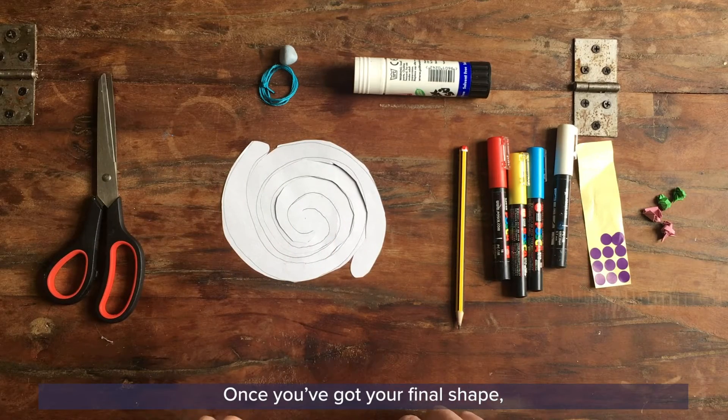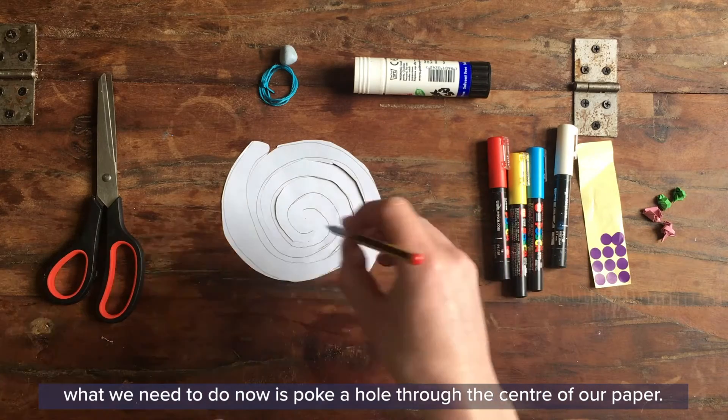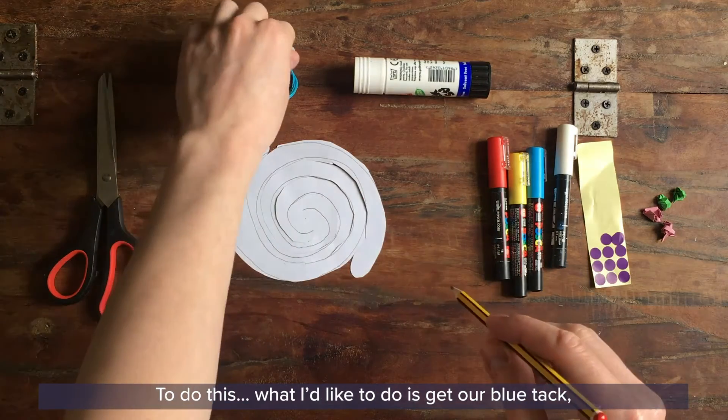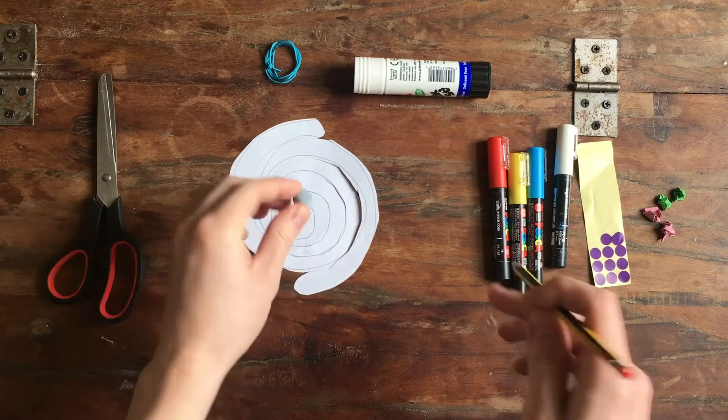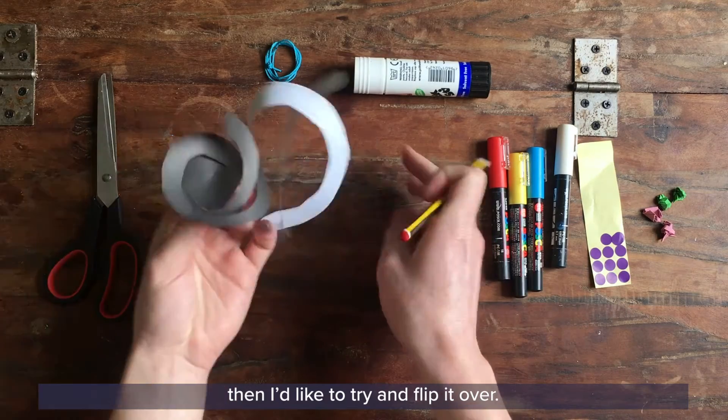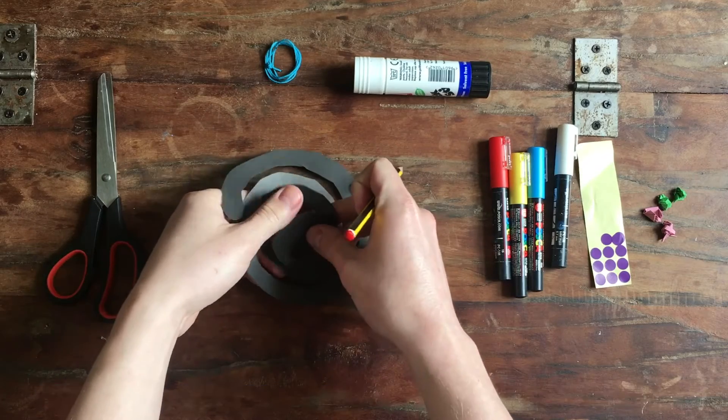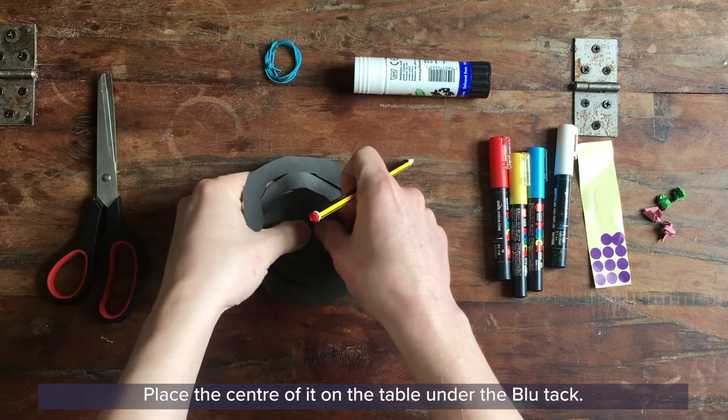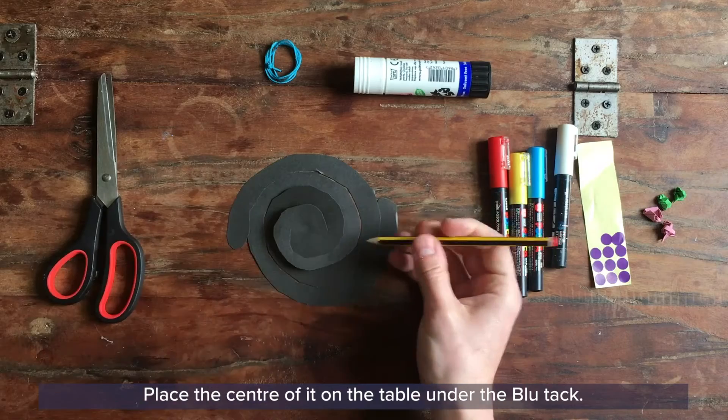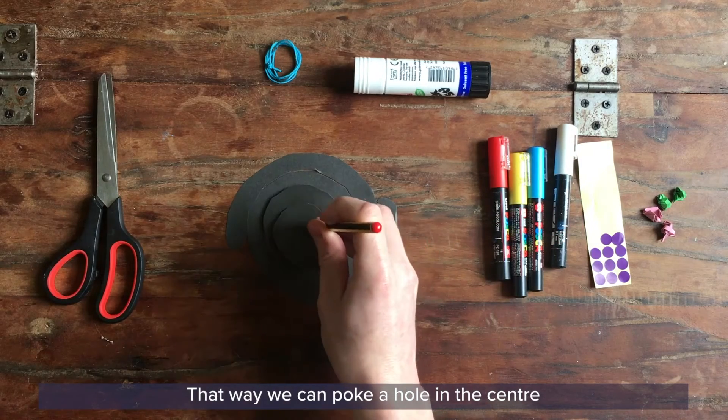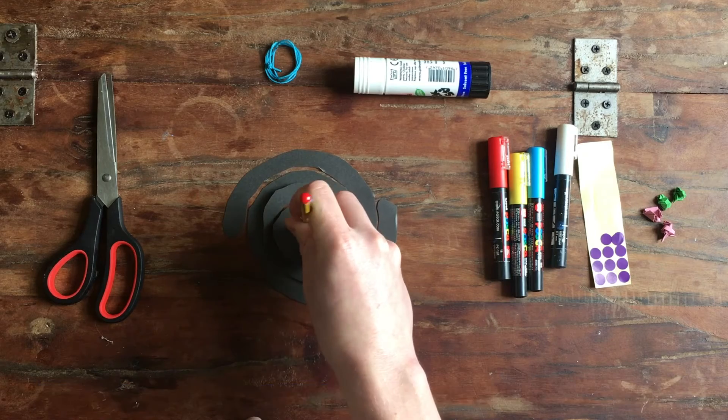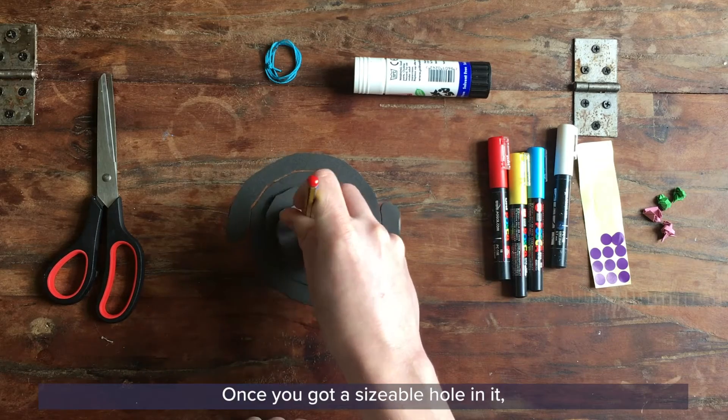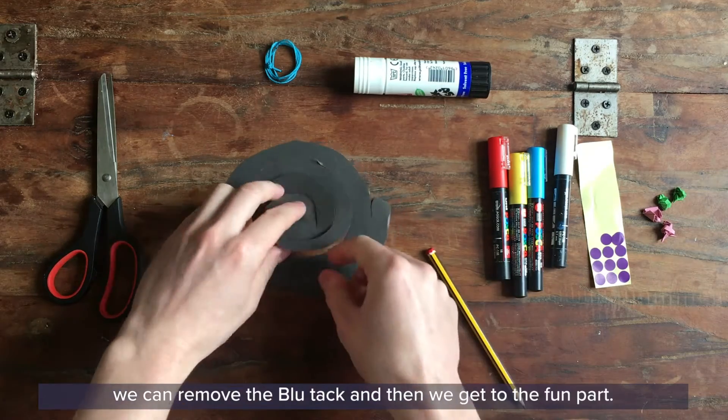Once you've got your final shape what we need to do now is poke a hole through the center of our paper. To do this what I'd like to do is get our blue tack, put it at the center of our galaxy, I'd then like to try and flip it over. There we go. And place the center of it on the table under the blue tack. That way we can poke a hole in the center without having to worry about stabbing ourselves in our fingers.